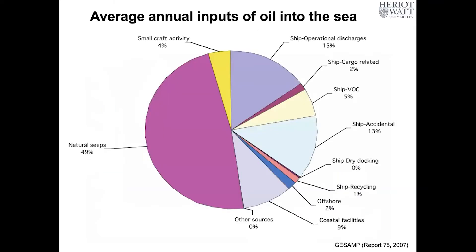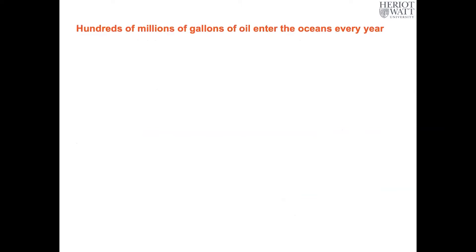In addition to large volumes of oil entering the sea from human activities, it is estimated that as much as 49% of oil entering the seas comes from natural oil seeps. This is represented by the huge purple section of this pie chart — the volume of oil that inflows into our seas and oceans from natural seeps every year. When you factor the volumes from both human activities and natural seeps, the total is enormous. Hundreds of millions of gallons of oil enter the oceans every year, which would be enough to cover the surface of all the oceans and seas in a thin blanket — just a few molecules of oil thick.